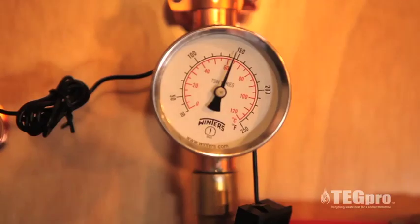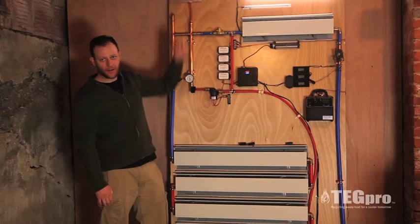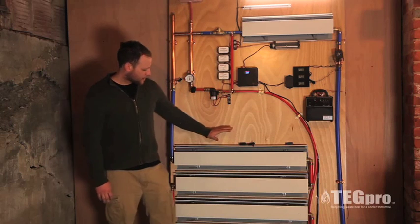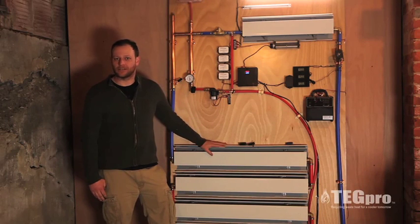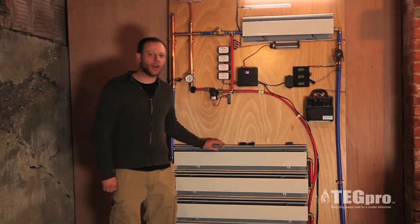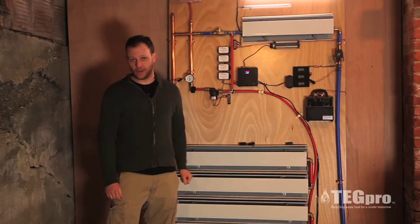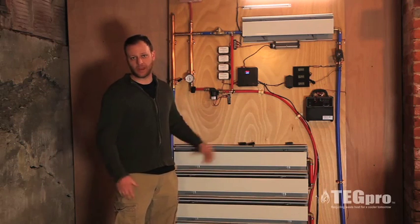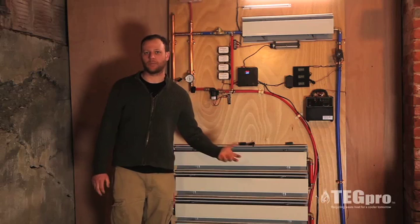This system does it by pumping glycol or water through normal tubing through a baseboard heating system like this. So it moves the temperature in the hottest part of your house, which is your wood stove, into the cold parts of your house like rooms, bedrooms, your dining room, places like that.